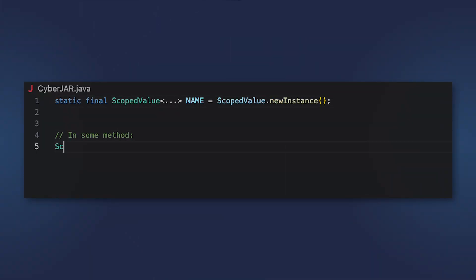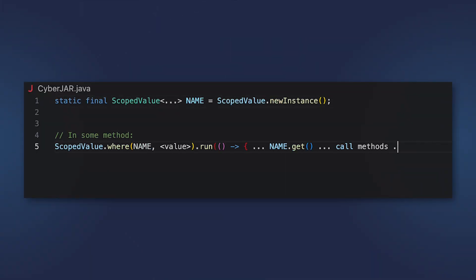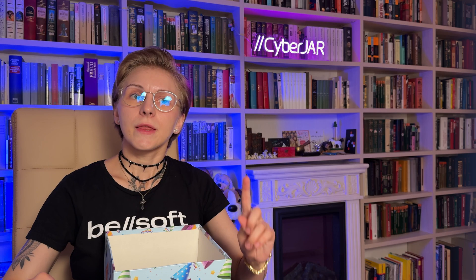This is something that can be sealed tight — that's scope values, something to carry your data safely. Finalized, by the way. Scope values carry immutable data that a method can share with its callers or child threads. They can help to increase code clarity and reliability.